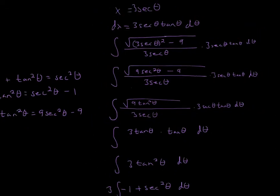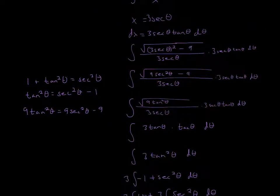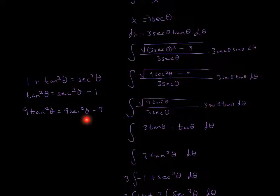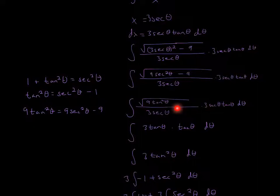With all of this, we can use a trig identity to simplify. The identity is 1 + tan²θ = sec²θ. Subtracting 1 from both sides gives sec²θ − 1 = tan²θ. Multiplying through by 9 gives us 9 sec²θ − 9 = 9 tan²θ. So we substitute and replace the expression inside the square root with 9 tan squared theta.